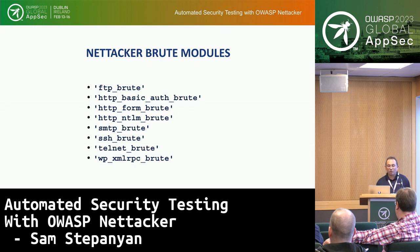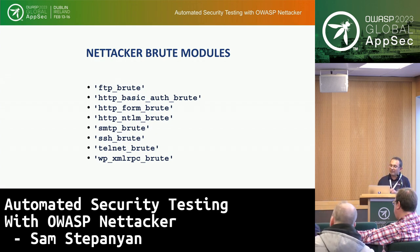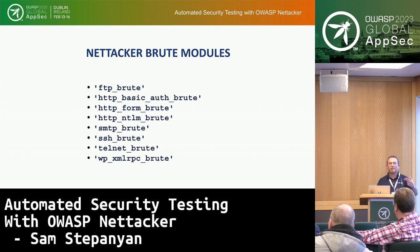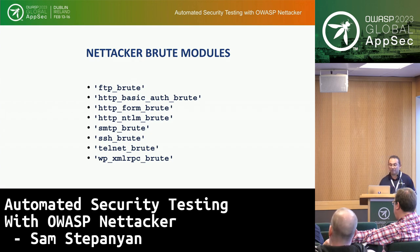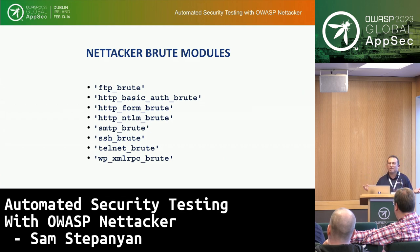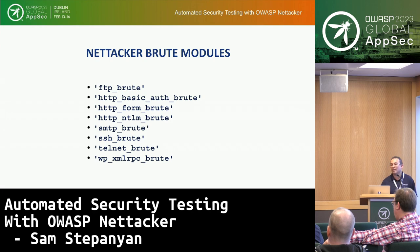For brute forcing, NetTacker supports FTP brute forcing, HTTP basic auth brute forcing, and HTTP form brute forcing — it looks for a form with fields called 'username' and 'password,' though you can configure custom field names. It also supports HTTP NTLM brute forcing, SMTP brute forcing — a vector many people forget, since attackers can enumerate usernames and passwords from your SMTP server — Telnet brute forcing for legacy network devices, and WordPress XML-RPC brute forcing to brute force into WordPress installations.